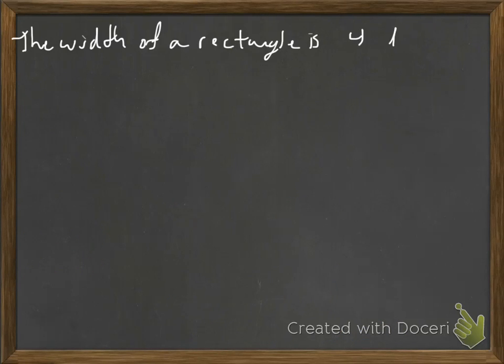Okay, let's look at another one. We'll speed it up a little bit. Alright, so it says the width of a rectangle is 4 less than the length. If the perimeter is 76 feet, find the dimensions.